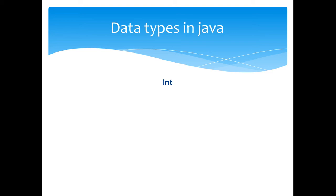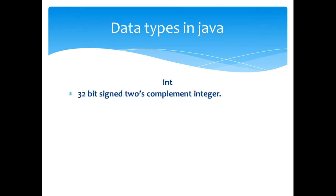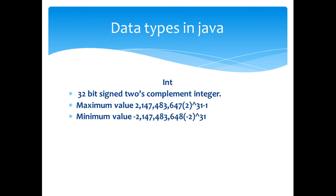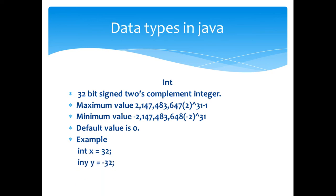The next type is int. It is a 32-bit signed two's complement integer. Maximum value and minimum value are shown here. The default value of integer is 0. Example: x is equal to 0, y is equal to minus 32.